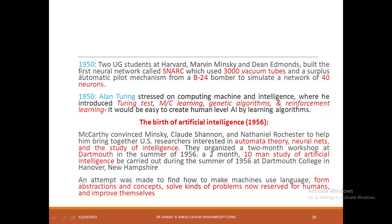During 1950, two students from Harvard, Marvin Minsky and Dean Edmonds, built a first neural network called SNARK using 3000 vacuum tubes and a surplus autopilot mechanism from a B-24 bomber to simulate a network of 40 neurons. In the same year, Alan Turing stressed on computing machine and intelligence, where he introduced the Turing test, machine learning, genetic algorithms, and reinforcement learning.